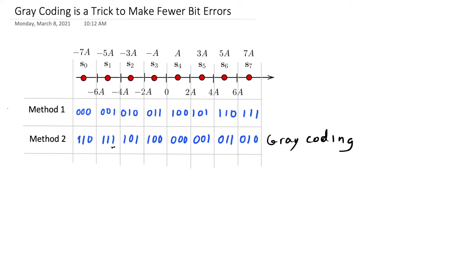Starting from symbol 1, going to symbol 2, I only change the middle bit. And so on, I only change one bit at a time in each pair of neighboring symbols.